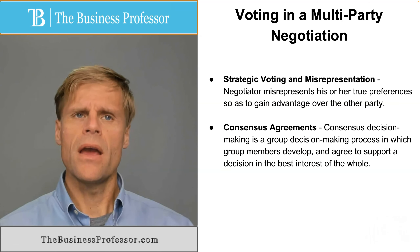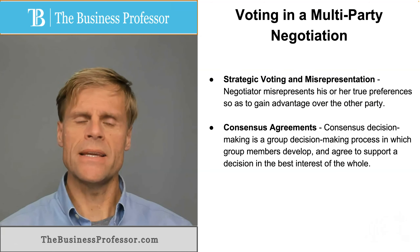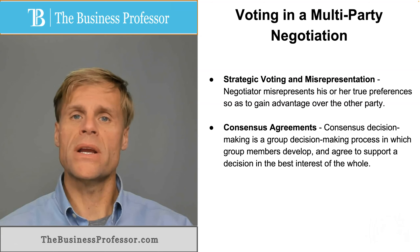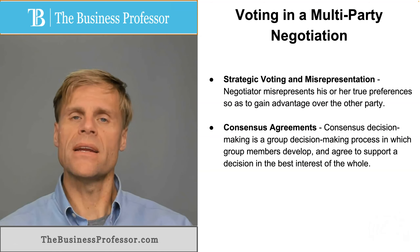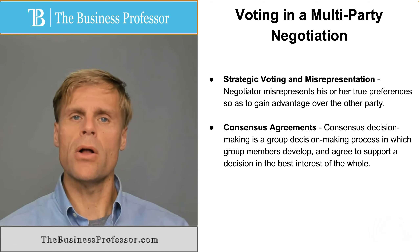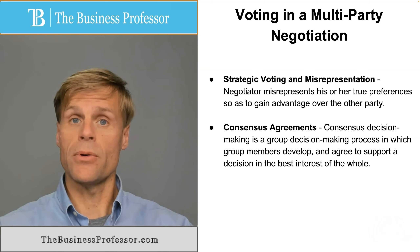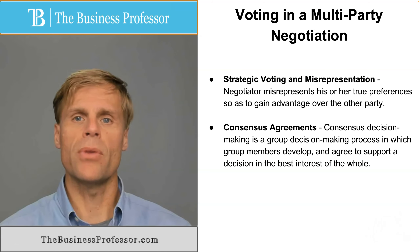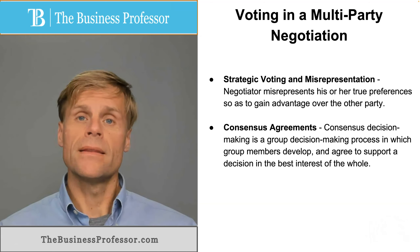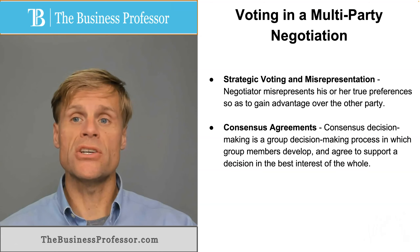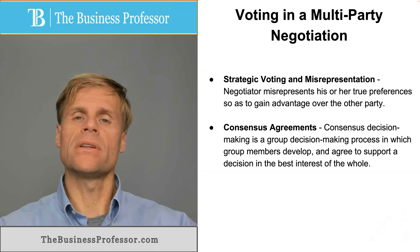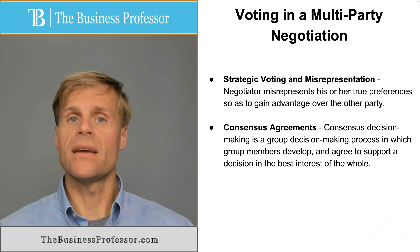Lastly, there is the issue of consensus agreement. A well-known cognitive bias called false consensus occurs when you believe the group wants one thing and readily go along with it rather than express your true interest — when in reality, the group does not want that thing. This causes the group to settle on a position that is nobody's first choice, and arises in smaller groups where individuals don't want to offend others. Beyond this bias, groups often employ a consensus agreement process where they negotiate internally to come to a position they believe is in the best interest of the whole group before negotiating externally.